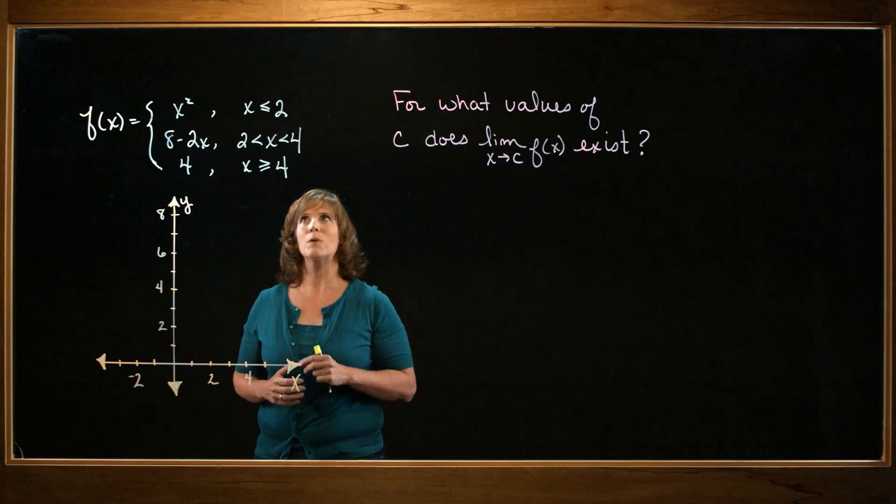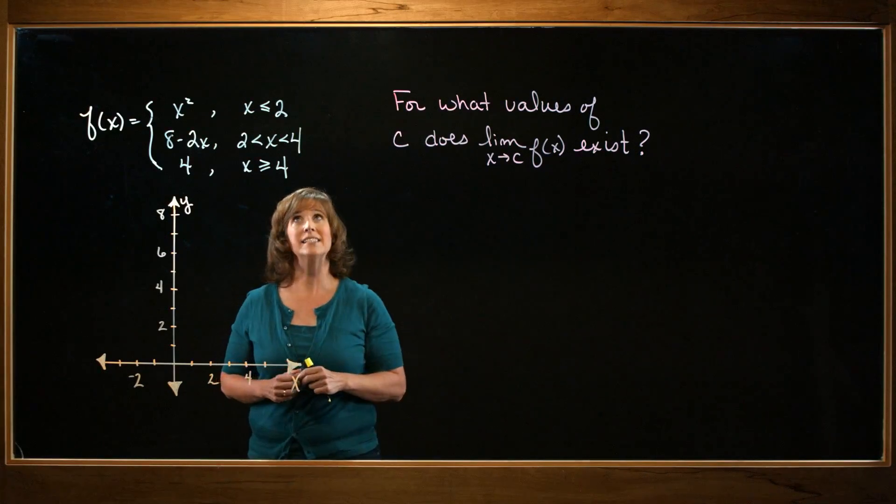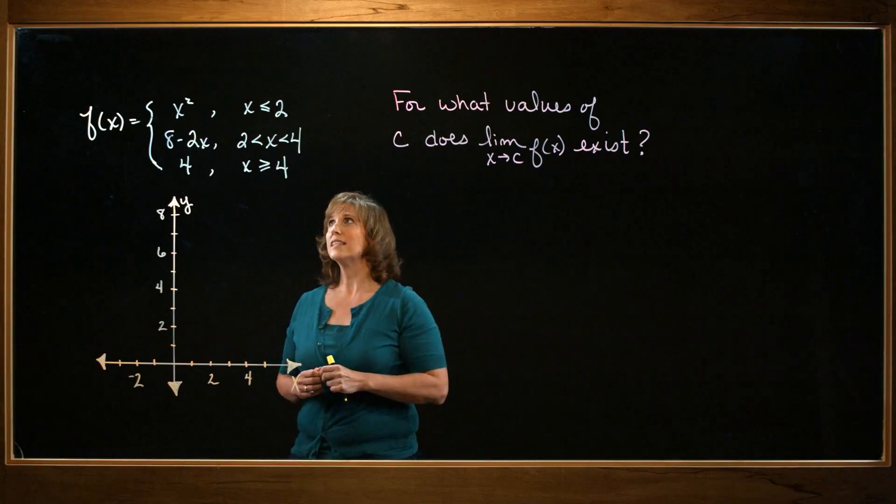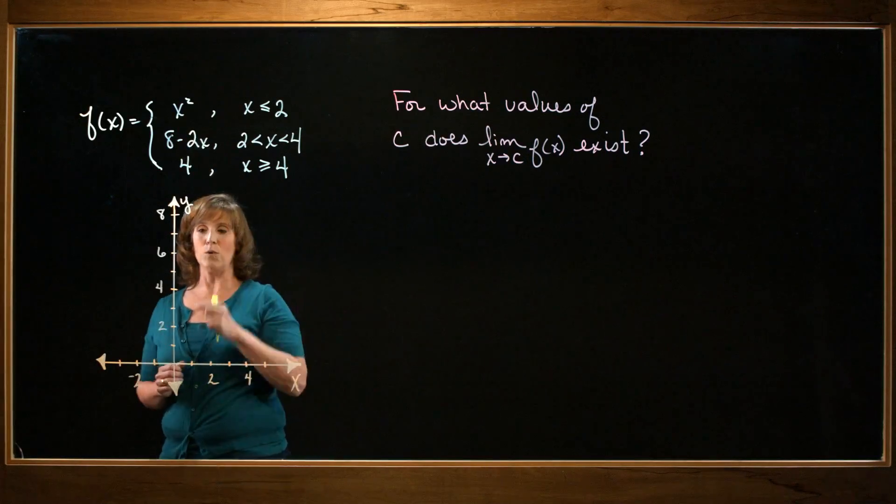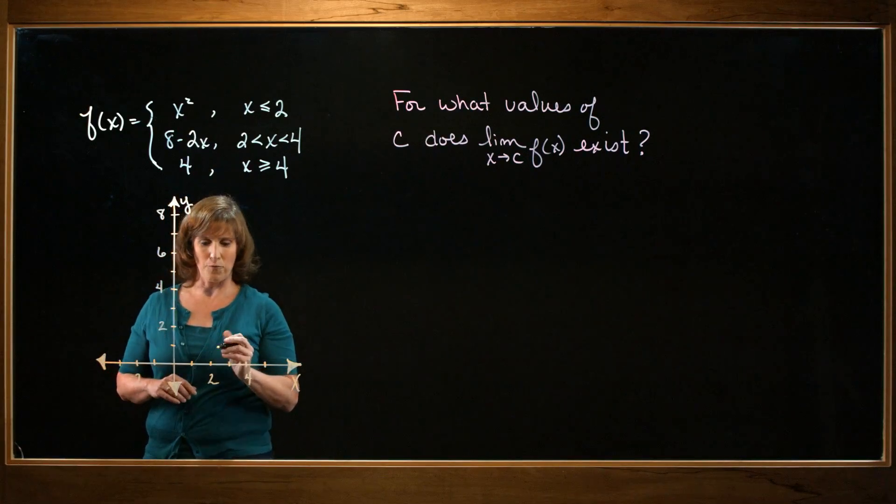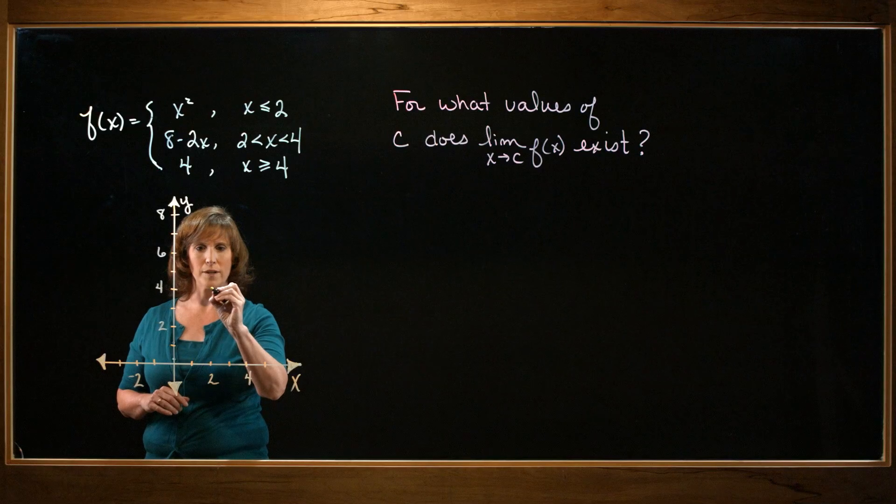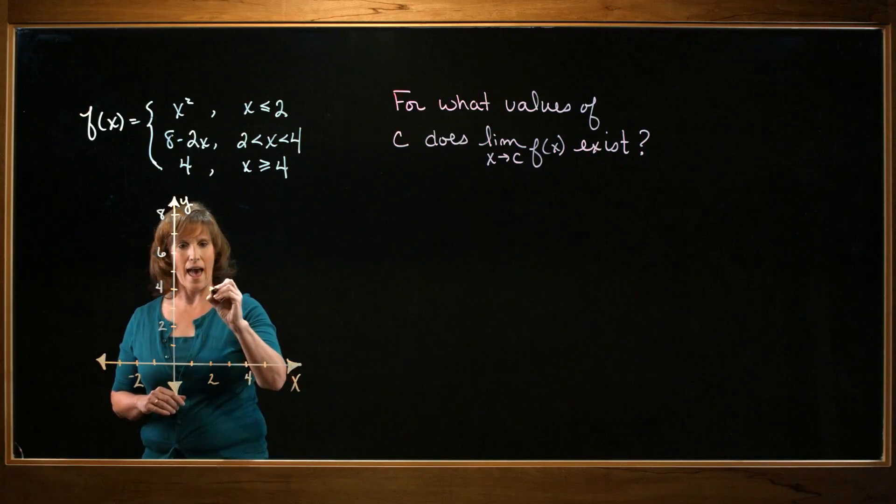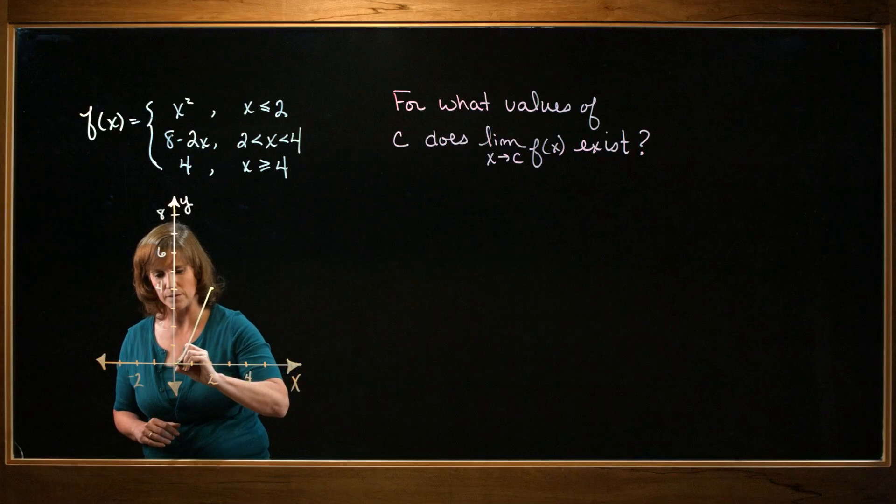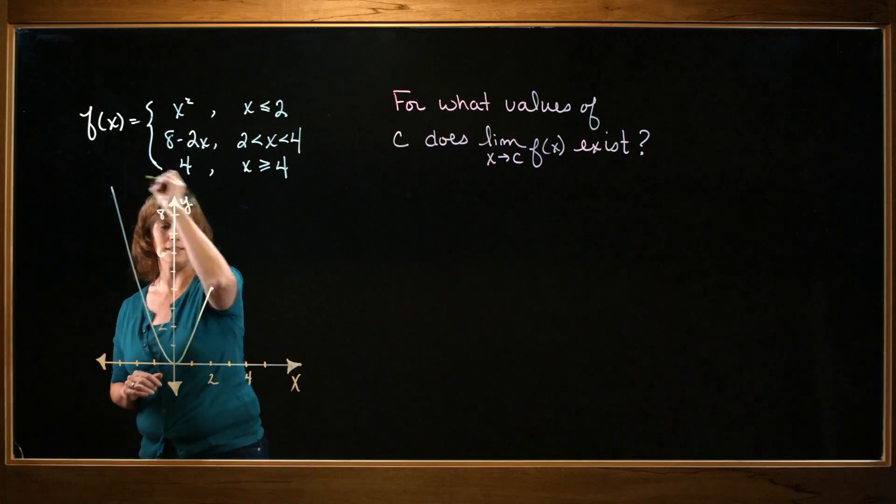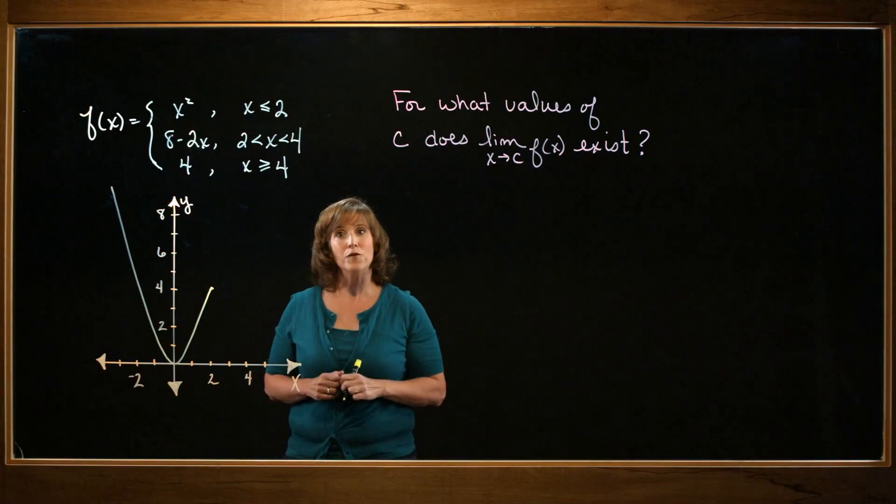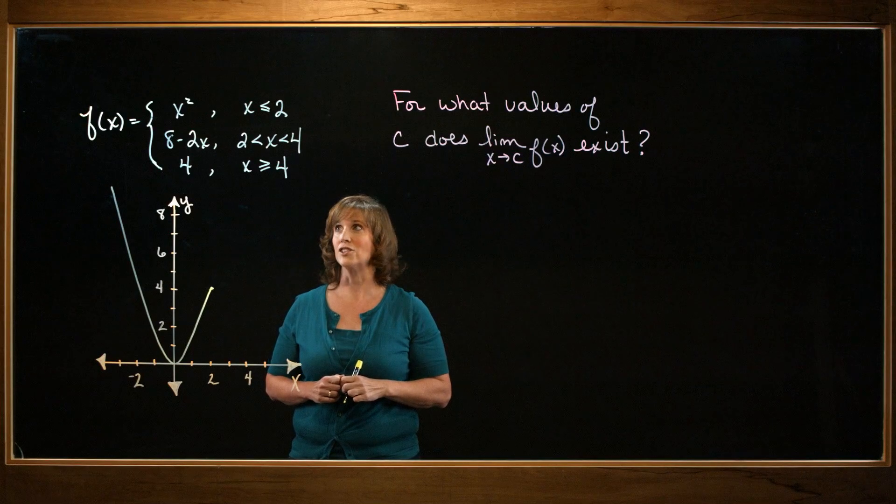However, I only want it to look like a parabola for values of x less than or equal to 2. So let's see. If x does equal 2, my y value will be 4. So that means that the point is on my curve. And then I know it looks like a parabola, whose vertex is at the origin. So that's the first tier of my piecewise function.